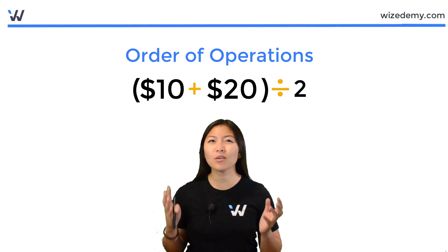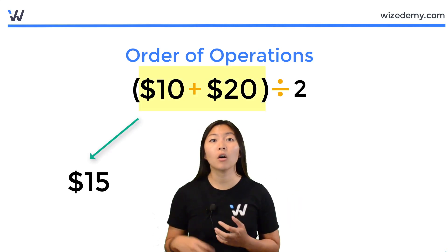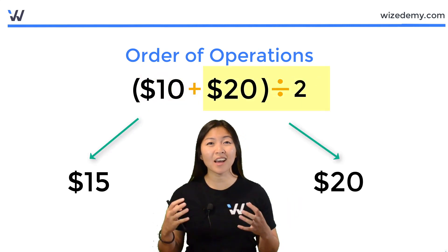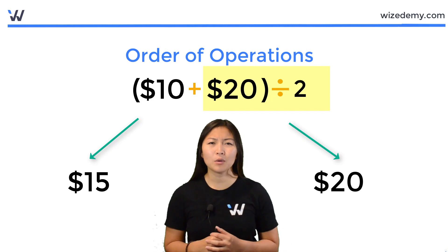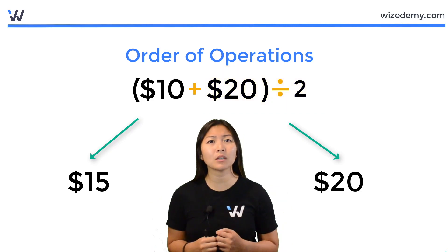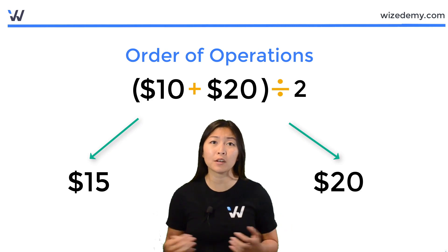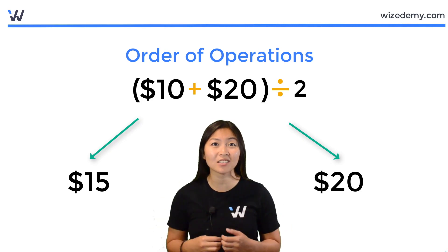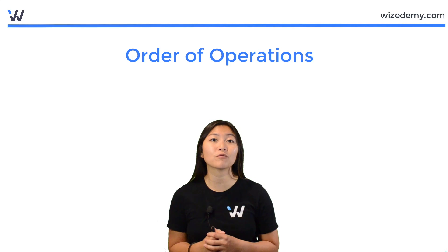Now, depending on which operation you do first, the addition or the division, you're going to end up with different numbers. Well, that's not really good because then if every time someone does a calculation they end up with a different number, our world will be in chaos. So that's where order of operations really comes in.